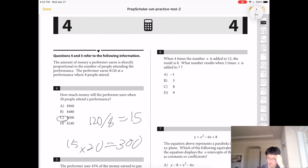Number 6, when 4 times x is added to 12, the result is 8. So x is negative 1. So 2 times x plus 7 would be 5. Yeah, 5.